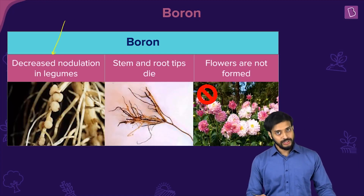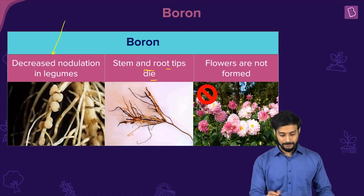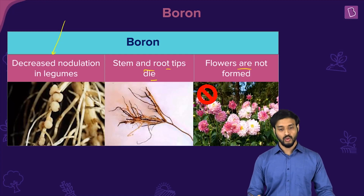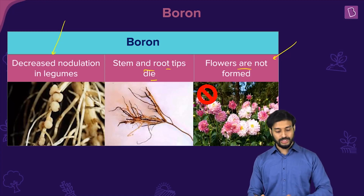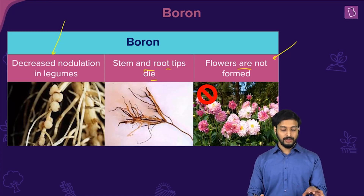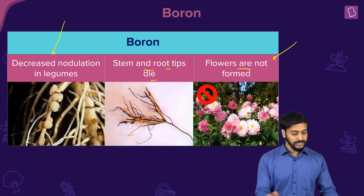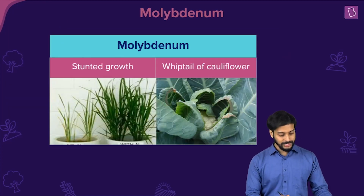Boron deficiency causes decreased nodulation in legumes, death of stem and root tips, and failure to form flowers. This is very undesirable for plant reproduction.